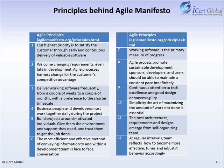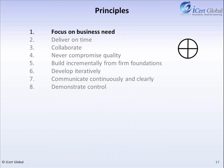Principles Behind the Agile Manifesto. These 12 principles, when followed properly and applied in business, will lead to better outcomes and better software. The first principle focuses on business need: the highest priority is to satisfy the customer through early and continuous delivery of valuable software.